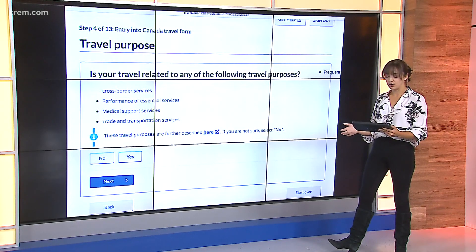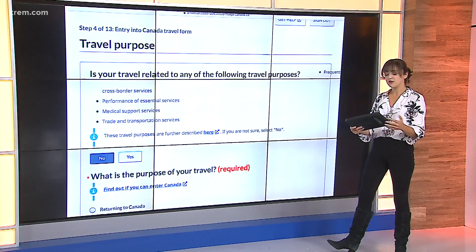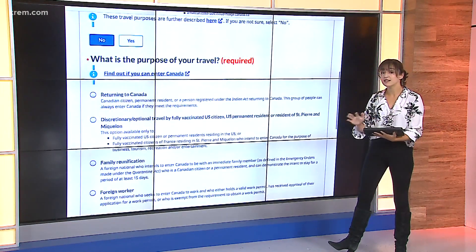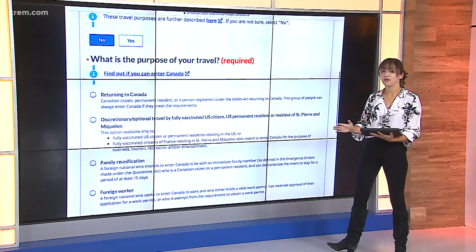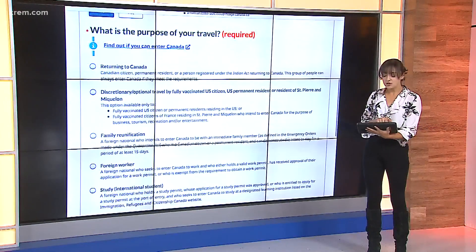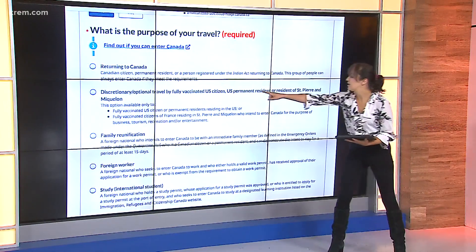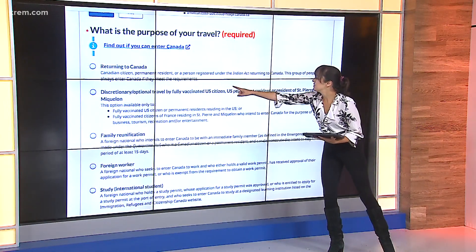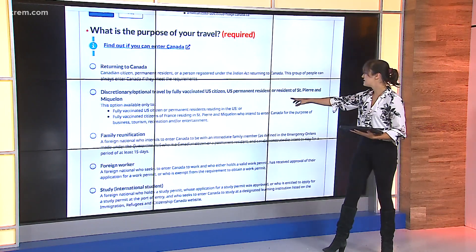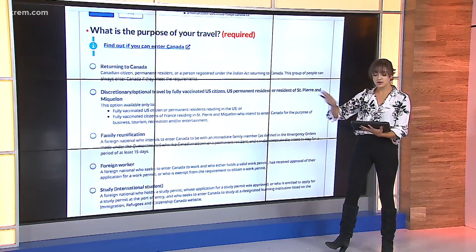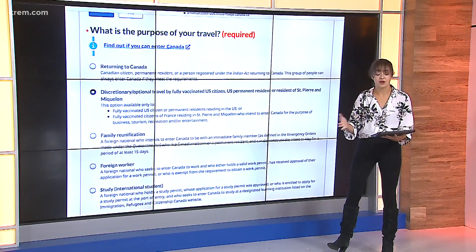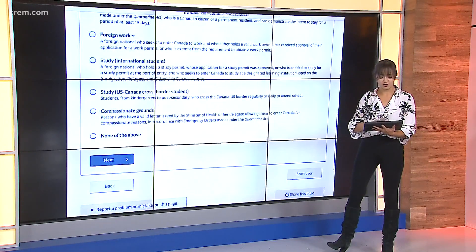Are you traveling with a purpose? No, we're not going for any medical reasons. And this is where it gets tricky — it's going to ask you why you're traveling. Now that the border is open for non-essential travel, this is where you can choose discretionary travel. Discretionary says optional travel by fully vaccinated U.S. citizen or permanent resident. That's what you're going to click if you're just going for leisure.